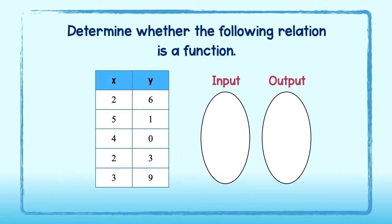Your turn. Fill in the mapping diagram to determine whether the following relation is a function. We will write our input values and output values in order. Our inputs are 2, 3, 4, and 5. You can see that the 2 appears twice, but we will only write it once because we are simply writing a list of input values.